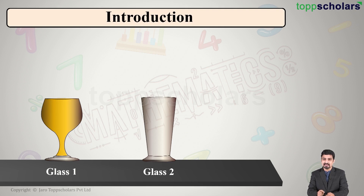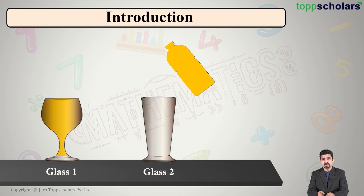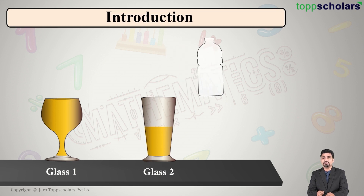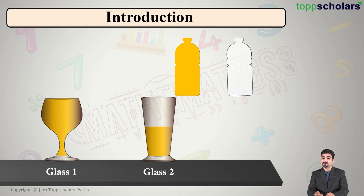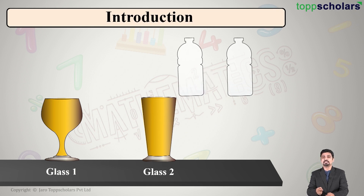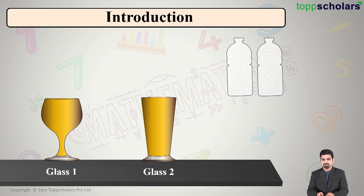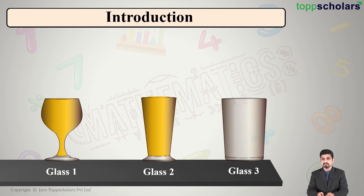Now I take the second glass. I fill the same bottle with juice again and empty it into this second glass, but I see that the glass is not yet full — it is only half filled. So I take one more exactly same-size bottle and empty it into the glass. Now the glass is full, and this time it required two bottles of juice to fill it.